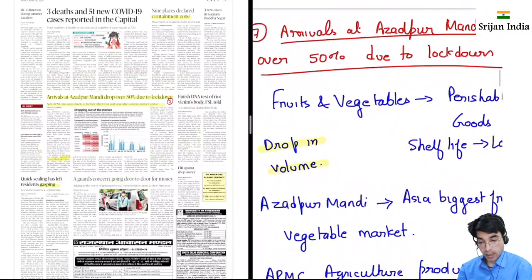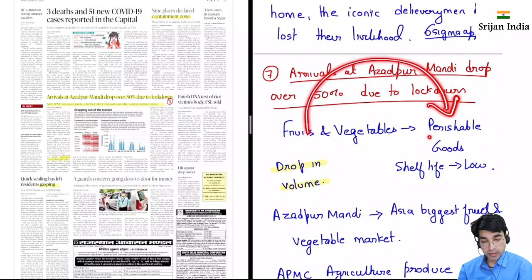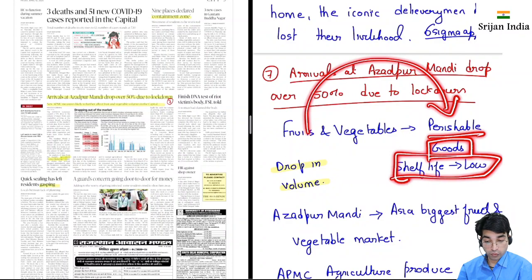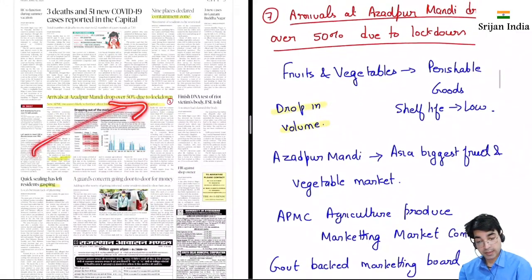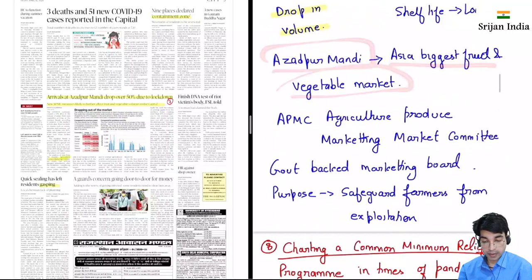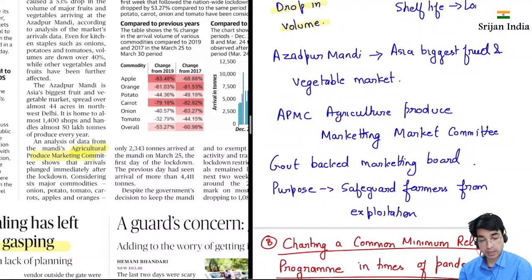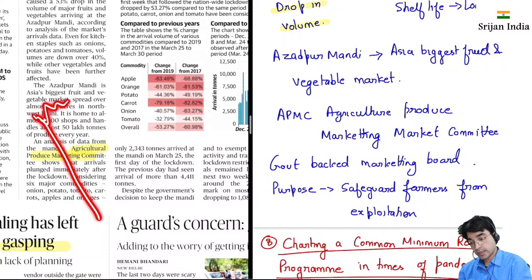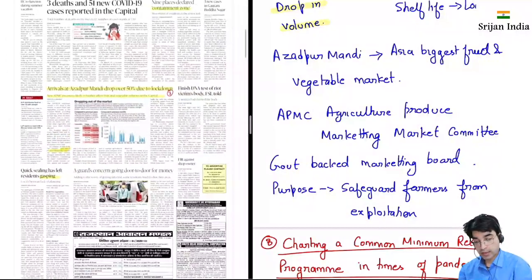Azadpur Mandi kaafi badhi mandi hai — fruits and vegetables, horticulture. Yeh jo food and vegetables hote hain yeh perishable goods hain, matlab inki shelf life low hoti hai. Drop in volume — inke volume mein drop hua hai, mandi mein aayi nahi hai. Azadpur Mandi Asia ki sabse badhi fruit and vegetable market hai. Idhar ek term hai APMC — Agriculture Produce Marketing Committee. Iska matlab hota hai ki jo kisaan hain aur yahan pe bich mein bichauliyas aa jaate hain, in sabse kisaan ko bacha ke rakhna hai — safeguard farmers from exploitation.